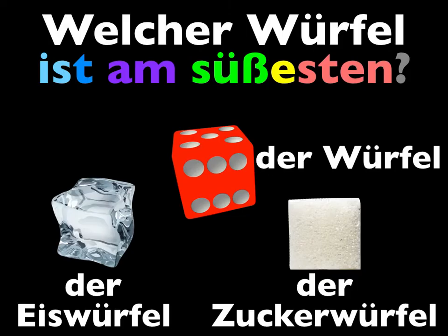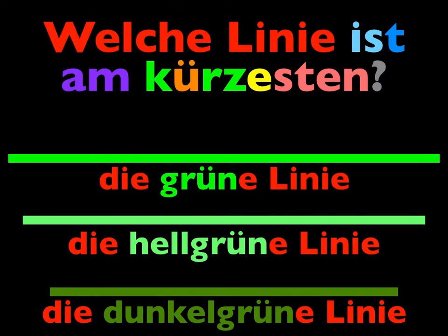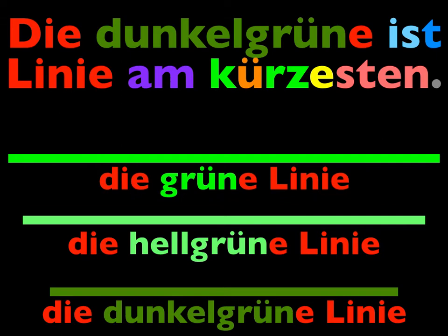So, welcher Würfel ist am süßesten? Der Zuckerwürfel ist am süßesten. And notice again, because süß ends in an S sound, we added the extra E before the S-T-E-N, as we've learned. Let's continue. Welche Linie ist am kürzesten? Die grüne Linie, die hellgrüne Linie, oder die dunkelgrüne Linie? Die dunkelgrüne Linie ist am kürzesten.